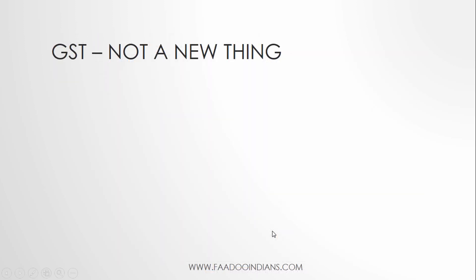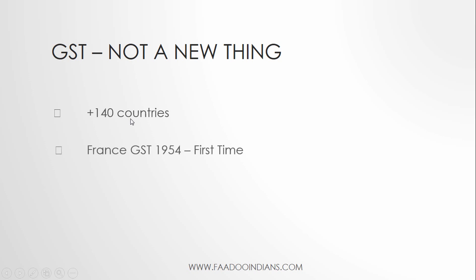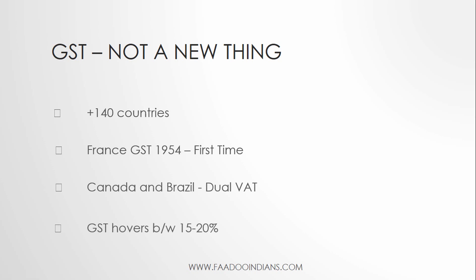GST is not a new thing for the world — more than 140 countries already have it. France was the first country to introduce GST in 1954. Typically it is a single rate system, but two or three rate systems are also prevalent; Canada and Brazil have dual GST. The standard GST rate in most countries hovers between 15 to 20 percent.